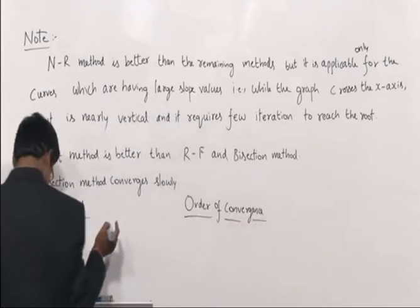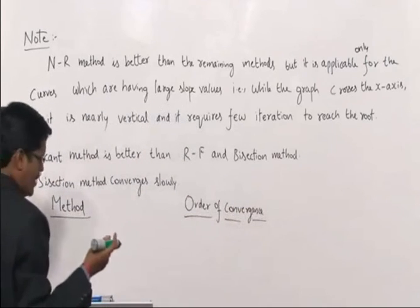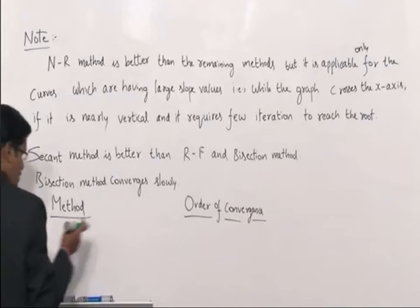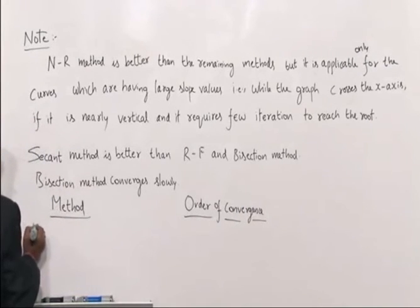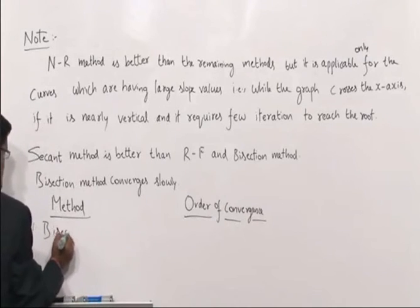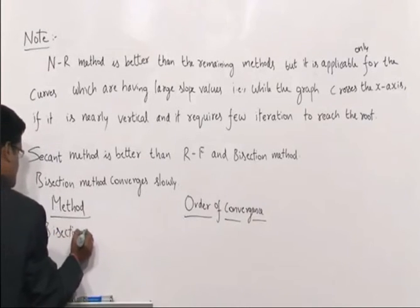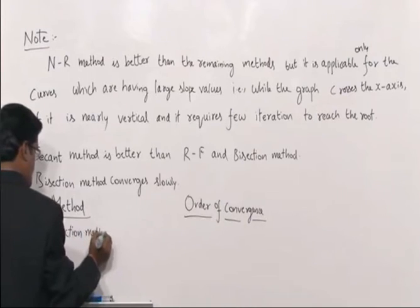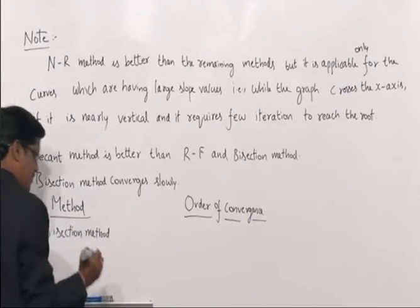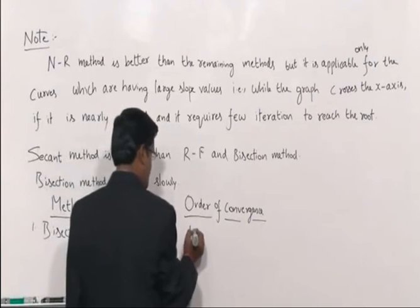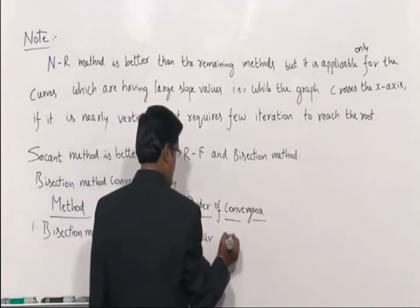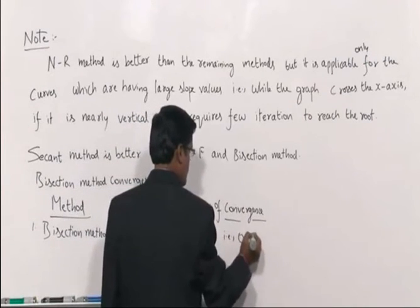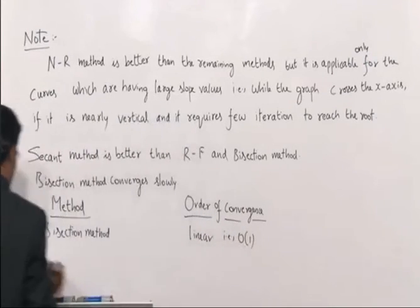The proofs take a minimum of one page — they are descriptive only. For one more question, you just need to know the order of convergence by heart. First method: bisection method — convergence is linear, that is order 1, also denoted by O(1).